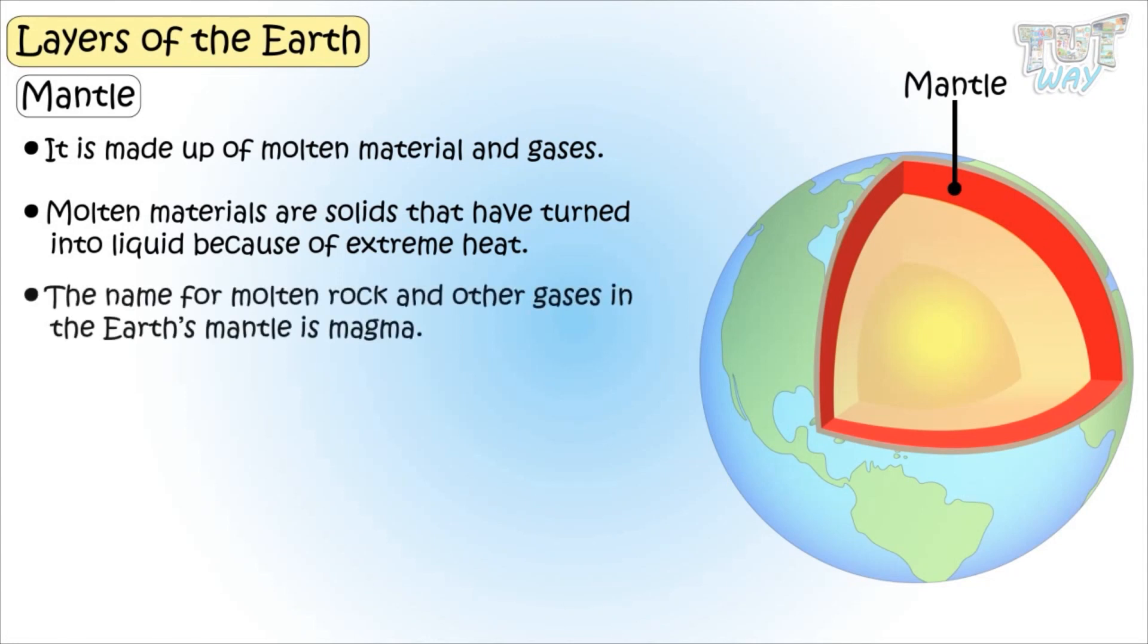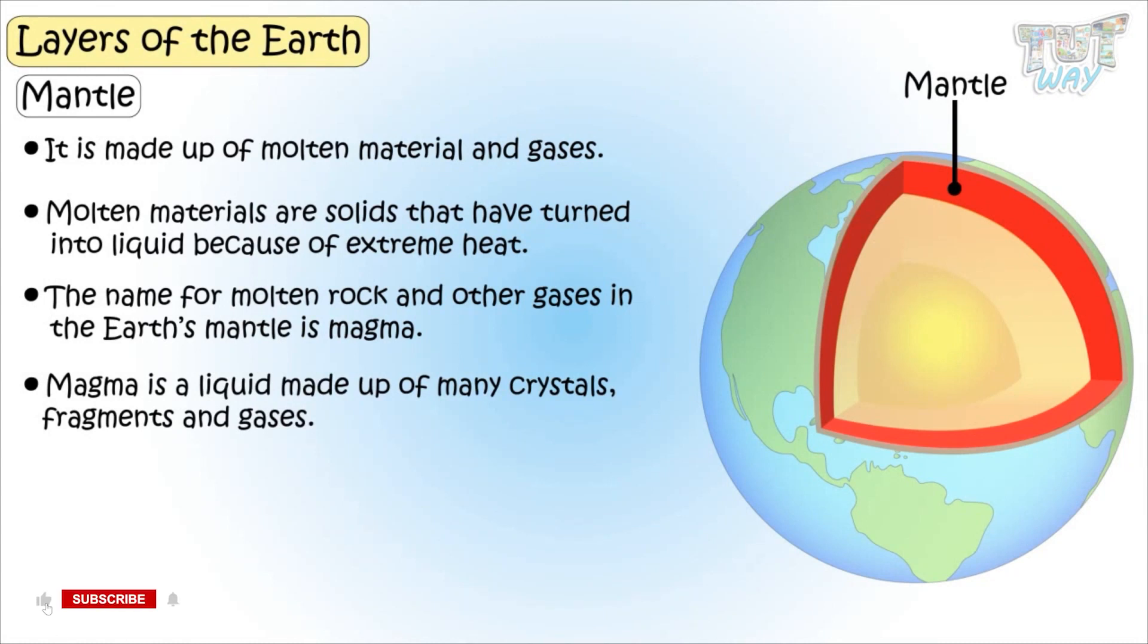The name of molten rock and other gases in the earth's mantle is magma. Magma is liquid made up of many crystals, fragments, and gases.